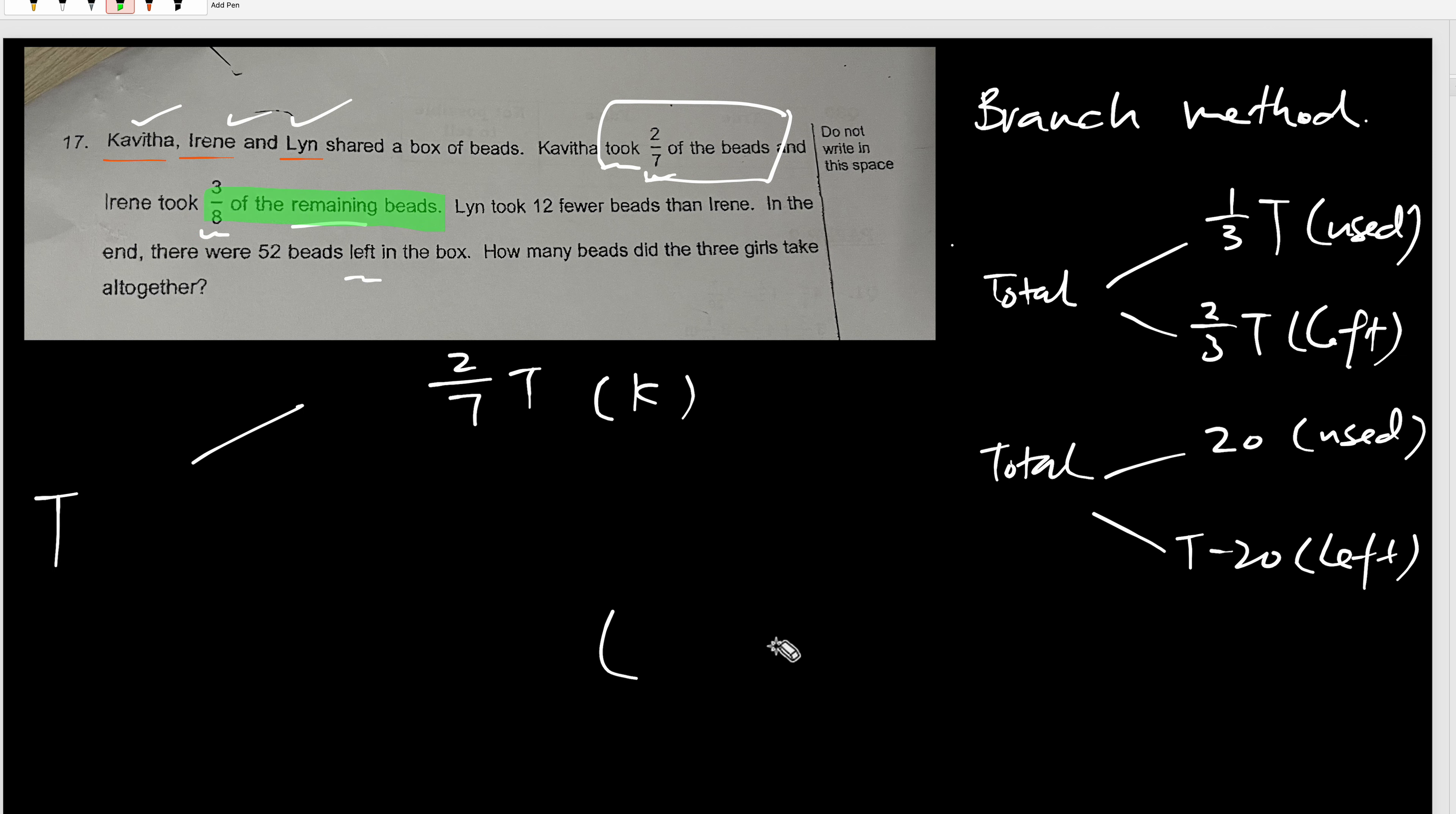So you need to get the remaining first. Therefore, I cannot start like this. I need to get the remaining first. What's the remaining? 2/7 T is K, remaining is 5/7 T, right? Then from here, I can use the 3/8 because it's 3/8 of the remaining times the remaining, which is this. And this will be Irene. So 3/8 of this is Irene, so 5/8 of the remaining will be Lin.